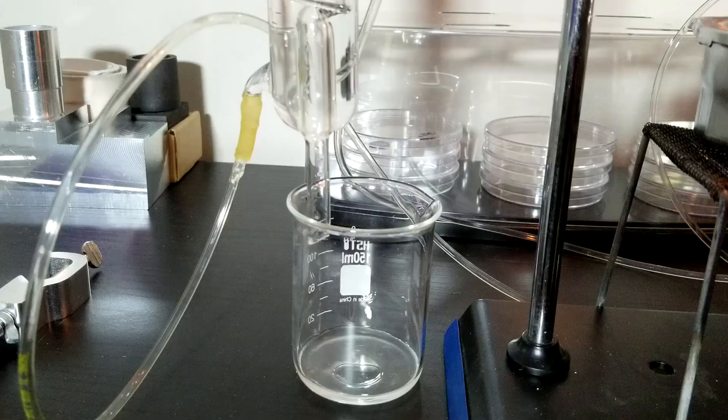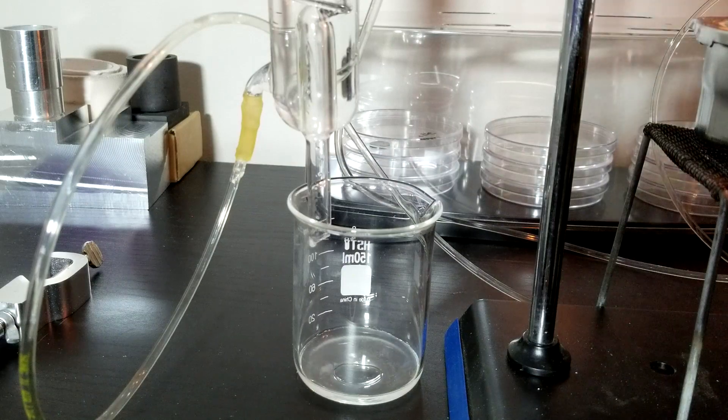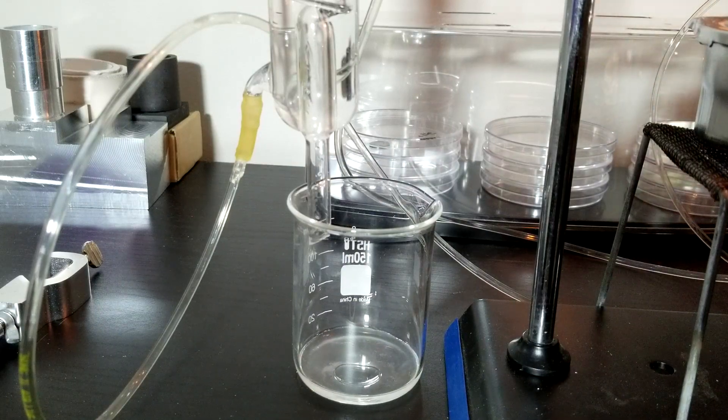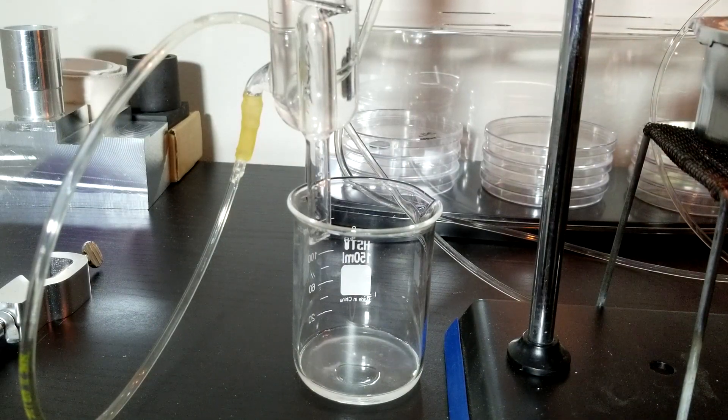At the bottom of the condenser, there is a beaker collecting the oil. Note that the product is slightly cloudy and you can see the separation layer due to the oil.